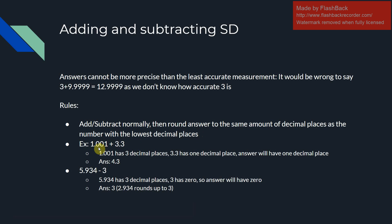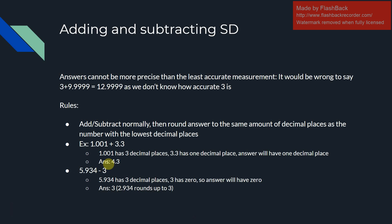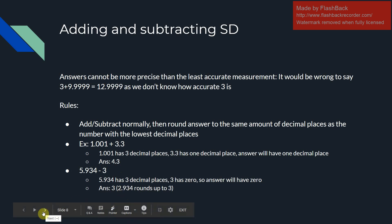If you plug 1.001 plus 3.3 into your calculator, you get 4.301, but the answer is 4.3 because you only take one decimal place. For 5.934 minus 3 — this number has no decimal places, so the answer will also have none. The regular answer would be 2.934, but this rounds up to 3 because you have zero decimal places and the 9 rounds up.